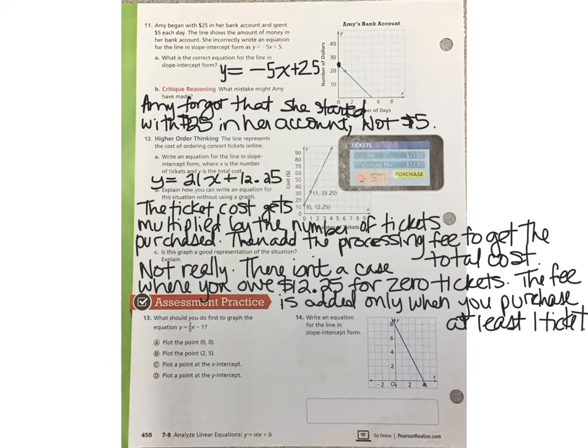Now take a look at question 12. The line represents the cost of ordering concert tickets online. So when you write the equation in slope-intercept form, remember x is the number of tickets that gets multiplied by $21 per ticket, and y is the total cost after you add in the processing fee. So part B explains how I could do this without looking at the graph. The sign essentially gives me all of the information that I need. The $21 gets multiplied times x because I have to pay $21 per ticket, and this fee gets added in as soon as I purchase a ticket. So whether I buy one ticket, 10 tickets, or 100 tickets, I pay a $12.25 processing fee.